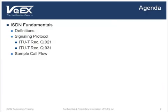Some basic definitions of ISDN fundamentals will first be provided. Then, the Layer 2 and Layer 3 signaling protocols Q921 and Q931 will be examined, followed by a sample call flow using Q931 messages. We will conclude with a section dedicated to troubleshooting tips.